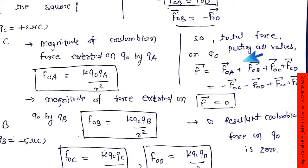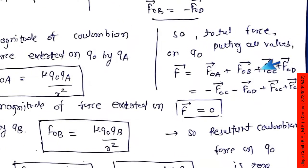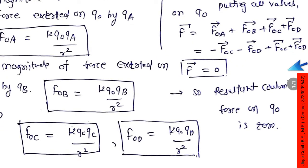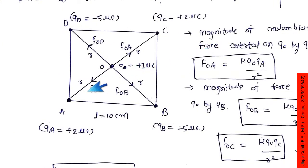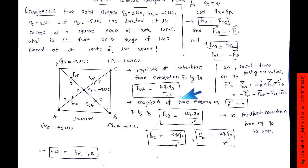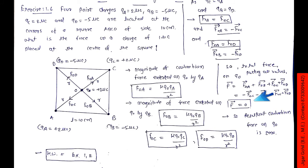Total force on q0 is: force on O due to A plus force on O due to B plus force on O due to C plus force on O due to D. We can write this as vector FOA + vector FOB + vector FOC + vector FOD. Since FOA = -FOC and FOB = -FOD, when we do this summation we get zero. So the resultant Coulombian force on q0 is zero.